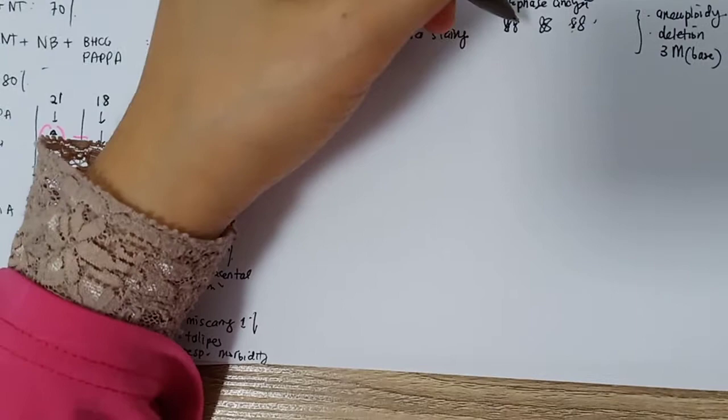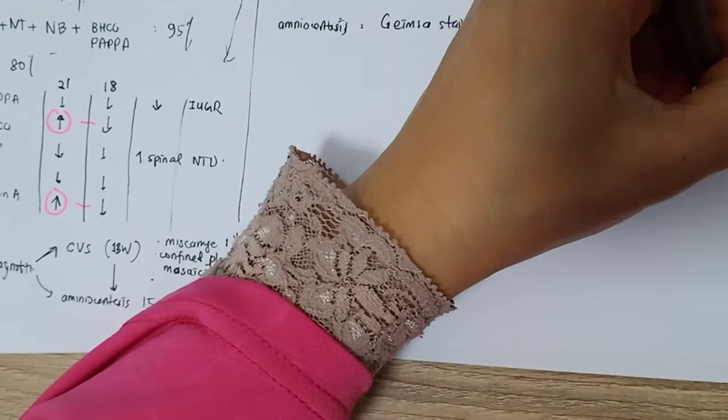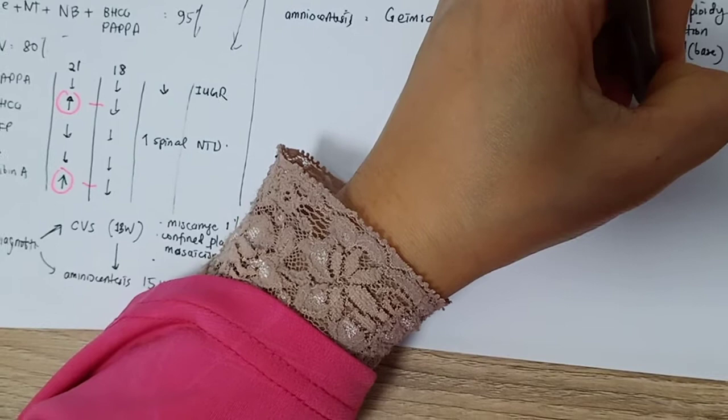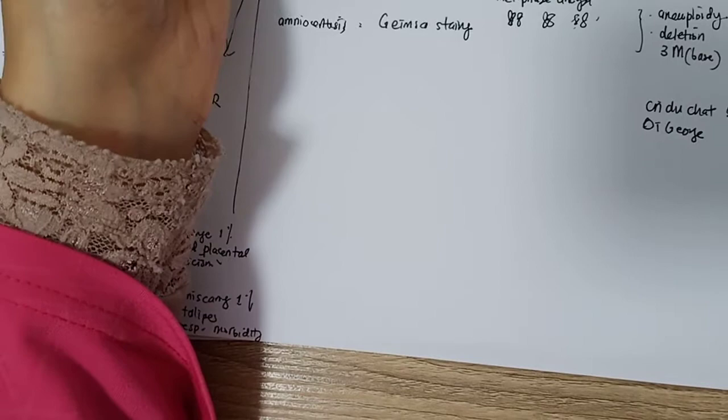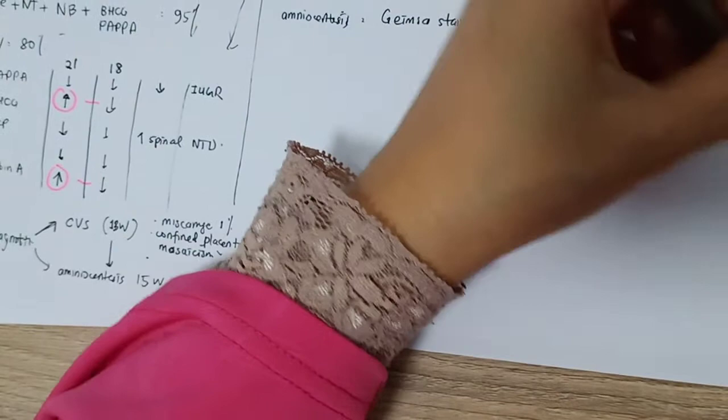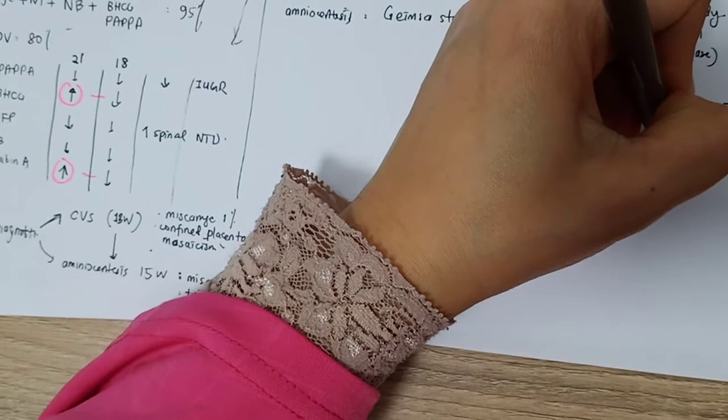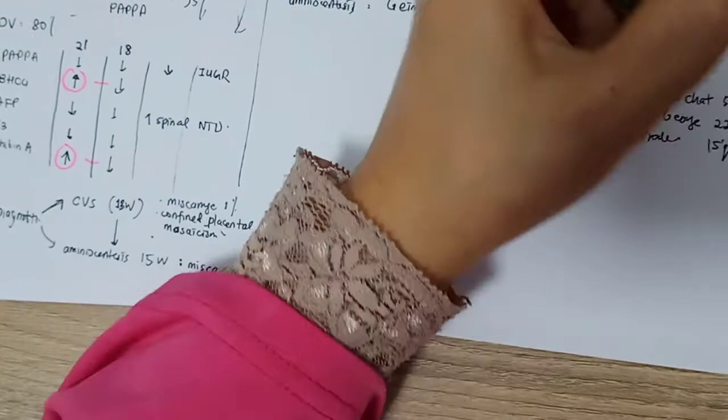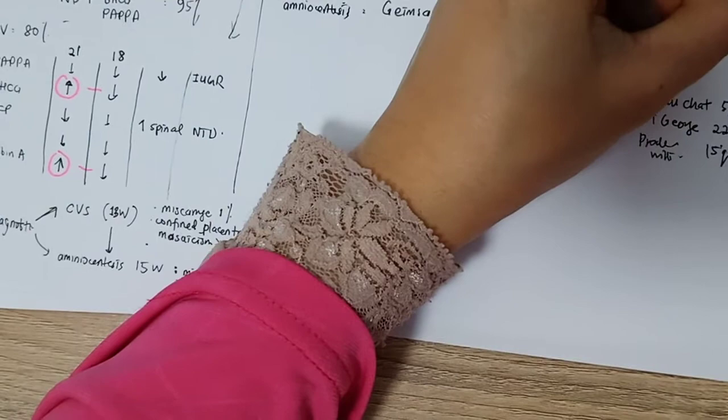You can see in Cri-du-chat, which is microdeletion of 5p, and DIGEORGE has microdeletion of chromosome 22q, the long arm. And Prader-Willi, for example, microdeletion of 15q. For these microdeletions, it usually can be missed during a standard karyotype.